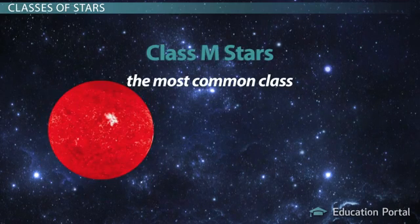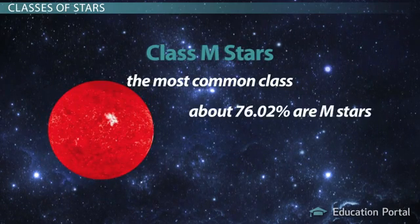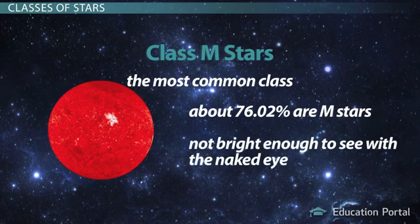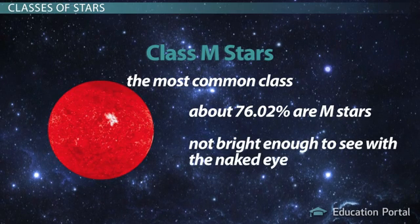Class M stars are the most common class, about 76.02% of stars. We can't see any Class M stars with the naked eye though, because none of them are bright enough.